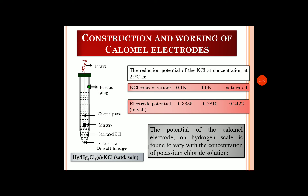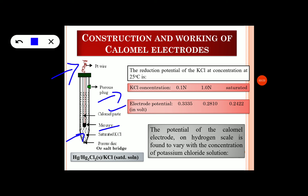A calomel electrode has an inner tube in which a layer of mercury has been placed, and over that a calomel paste is present. The calomel paste is a mixture of mercury and mercurous chloride salt. A platinum wire is immersed in the layer of mercury to provide electrical contact. In the outer tube, a saturated KCl solution is filled. At the top, there is a porous plug to fill the saturated solution, and at the bottom, there is a porous disk which serves as a salt bridge.